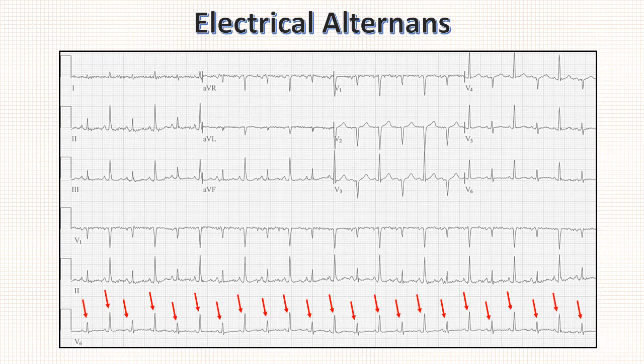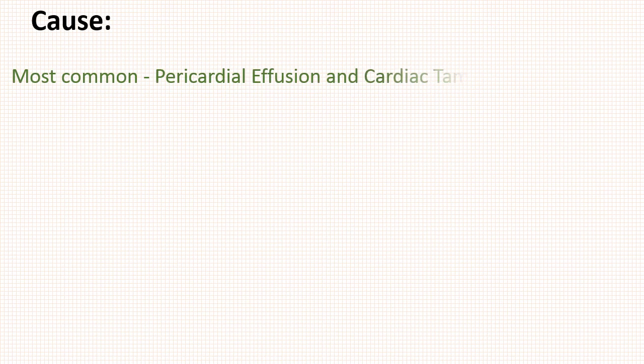Note that there is no disturbance in rhythm — rhythm is regular. Coming to etiology, electrical alternance is most commonly attributed to pericardial effusion or cardiac tamponade.